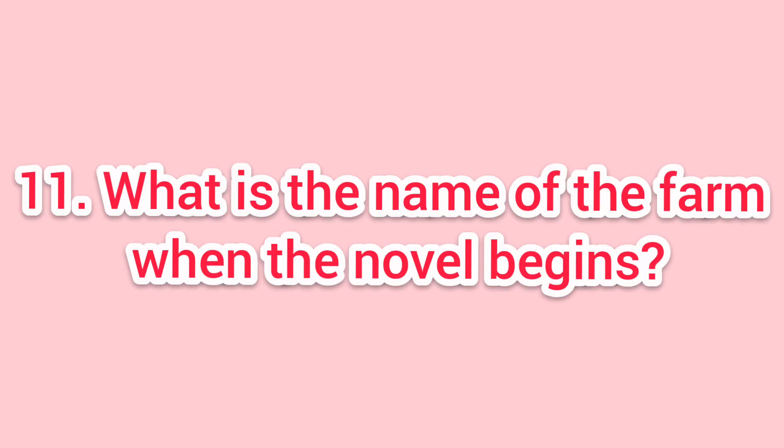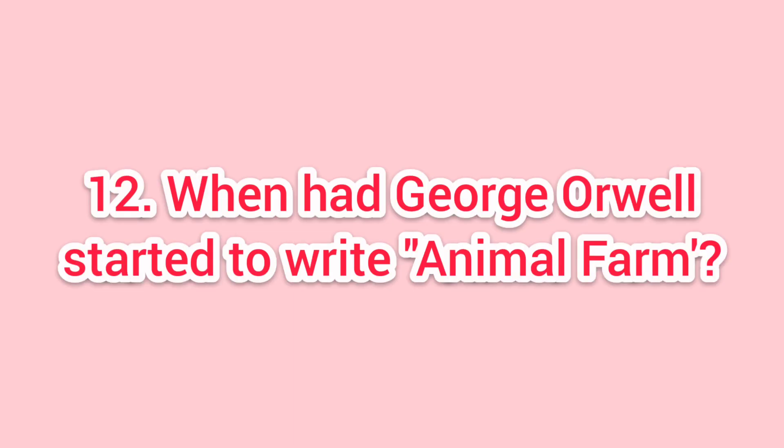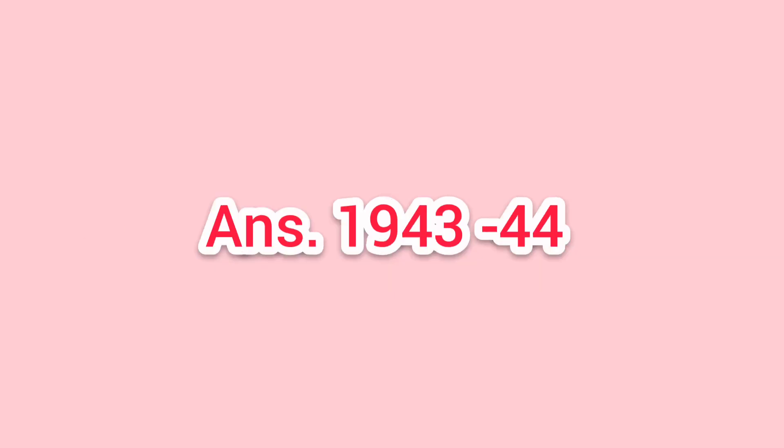Eleventh question: what is the name of the farm when the novel begins? Answer: Manor Farm. Twelfth question: when had George Orwell started to write Animal Farm? Answer: 1943 to 1944.